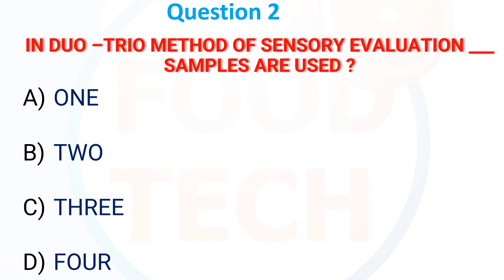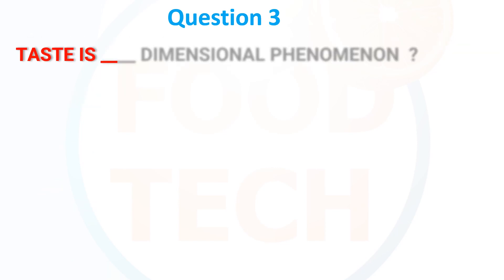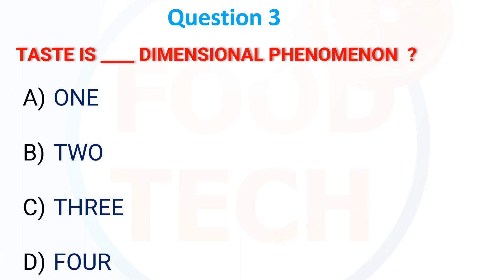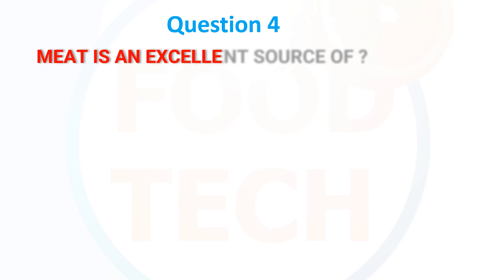Options: A) 1, B) 2, C) 3, D) 4. The answer is C) 3. Taste is a dash-dimensional phenomenon. Options: A) 1, B) 2, C) 3, D) 4. The answer is D) 4.